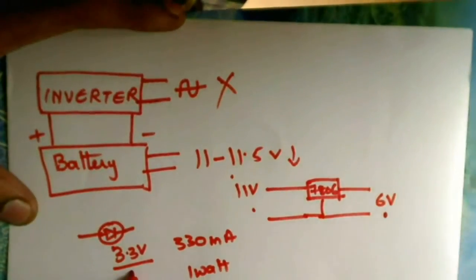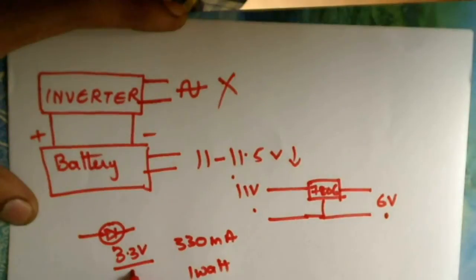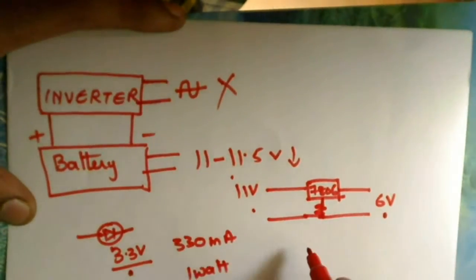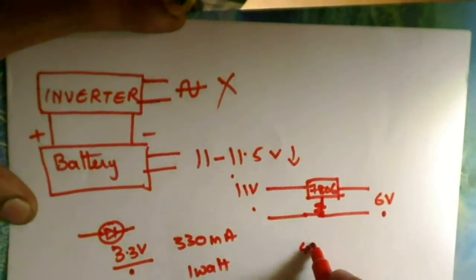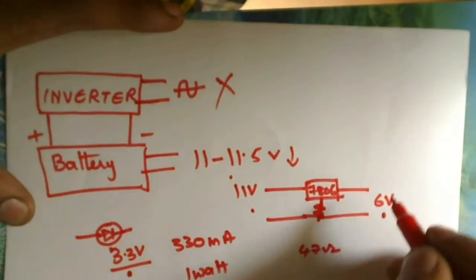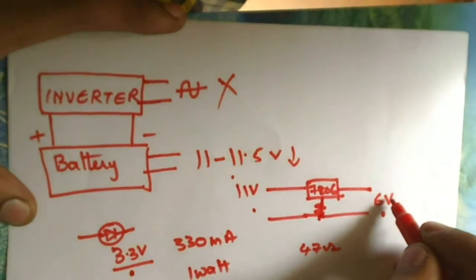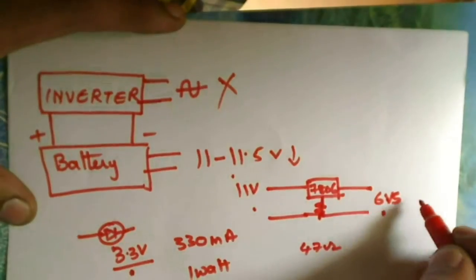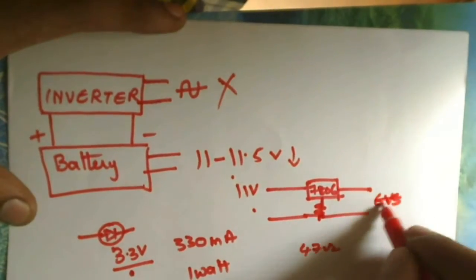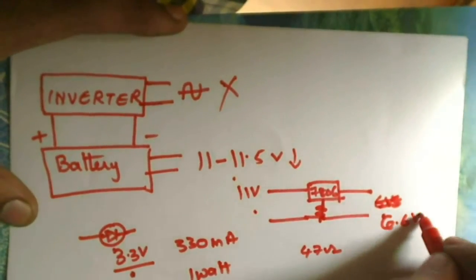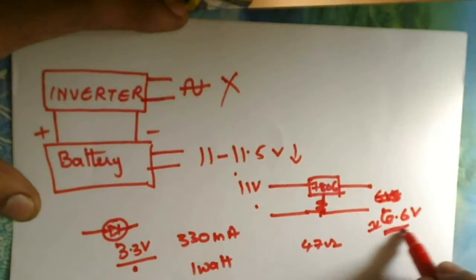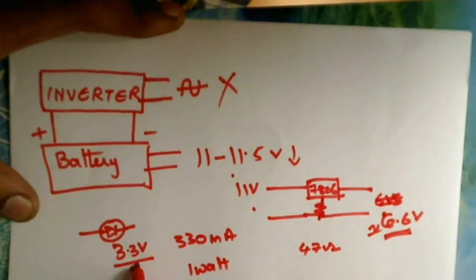But each LED needs 3.3V. So what we're going to do is we're going to connect a small resistor, say about 47 ohms here, to increase the voltage to about 6.5 to 6.6V. So the voltage we get here is 6.6V approximately. This 6.6V can drive 2 LEDs in series.